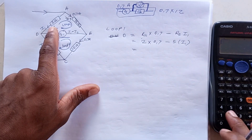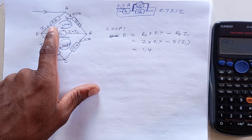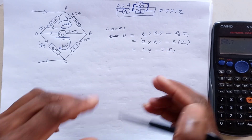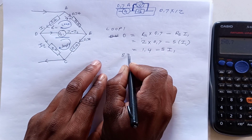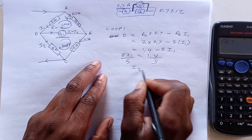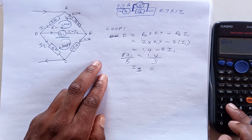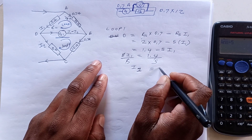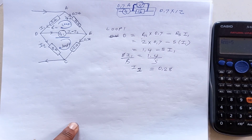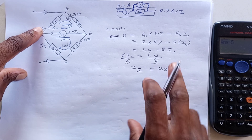So 2 times 0.7 equals 1.4, and this would be minus 5·I1. Since 5·I1 is negative, let's take it to this side and make it positive. We divide both sides by 5 to get I1. We divide 1.4 by 5 and we get 0.28. So that's the current I1.